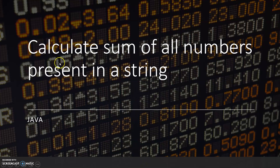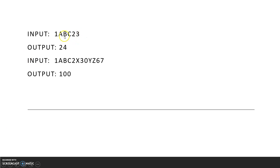In this video, I'm going to discuss a very interesting program involving strings: calculate the sum of all numbers present in a string in Java. For example, if our input string is '1abc23', then 1 is one integer and 23 is another, so 23 plus 1 gives an output of 24.